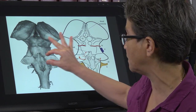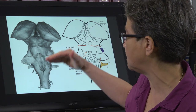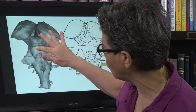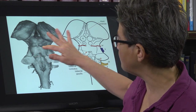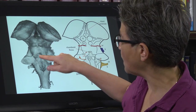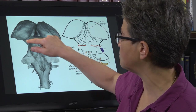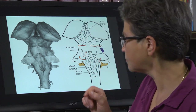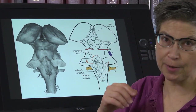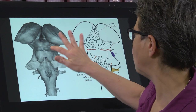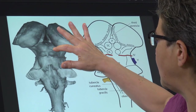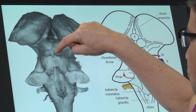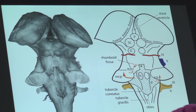Caudal to the cerebellar peduncle attachment is the medulla, and rostral to it the midbrain starts right here. The midbrain is marked by these four hills, or colliculi — also called the quadrigeminal plate. It's an area of four hills: the two hills in the front are the superior colliculi, and the two hills in the back are the inferior colliculi.